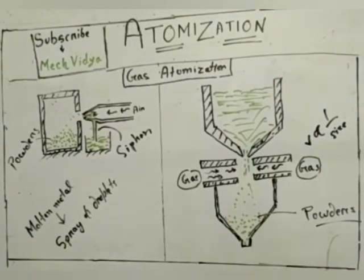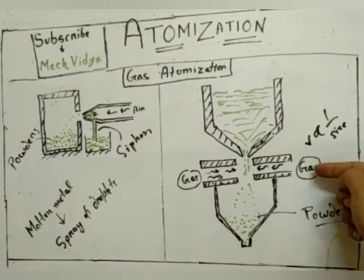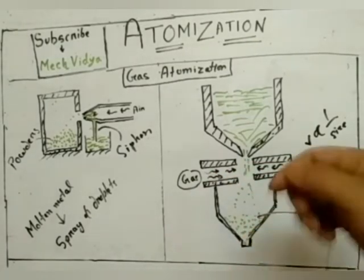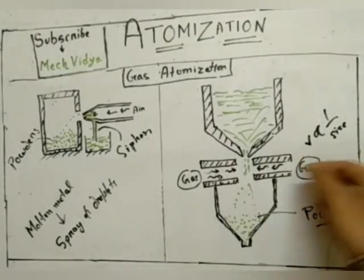If I want very small size particles, the velocity of the gases has to be very high. Similarly, if I want bigger size particles, the velocity has to be moderately high. So this is how gas atomization takes place.